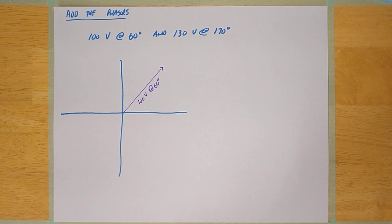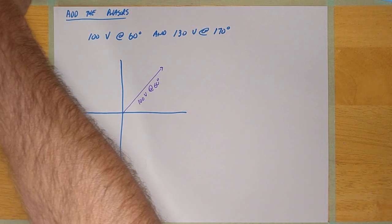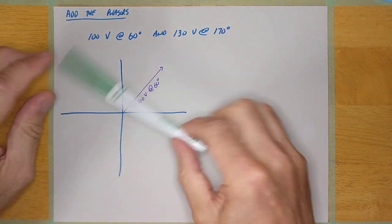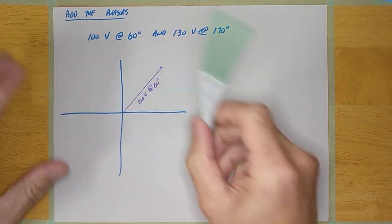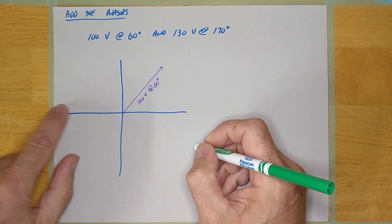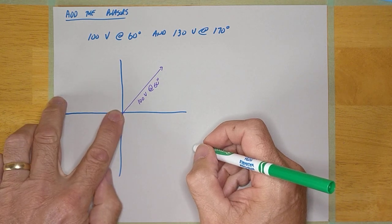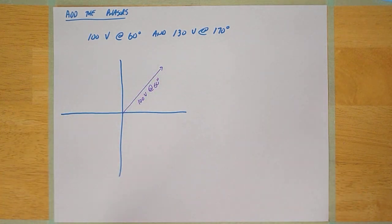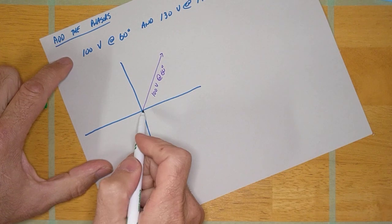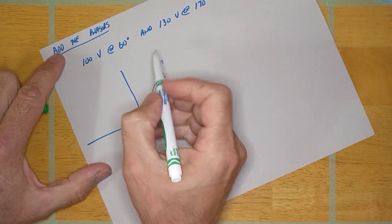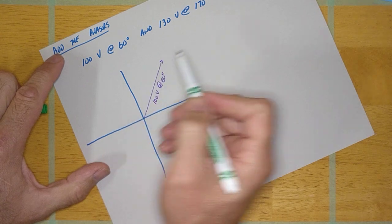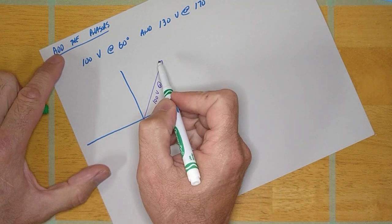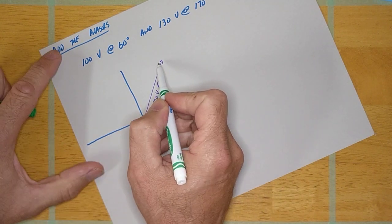Now the other phaser, which is 130 volts at 170 degrees. Well, here's zero, here's 90, here's 180. That phaser is going way out this way somewhere. But I have to move it tip to tail. So I'm going to do that right now. I mean I could draw it there, but then I'd have to move it anyway. So I'm just going to draw it right now where it's going to end up.